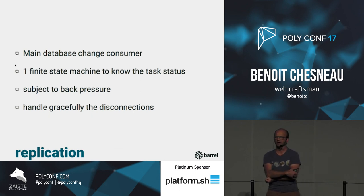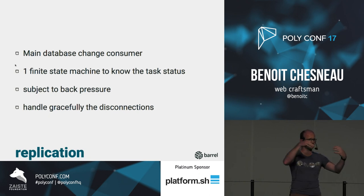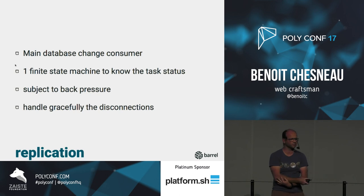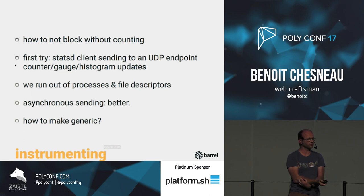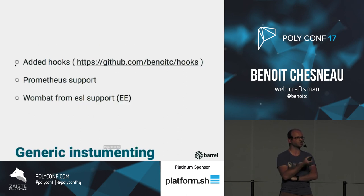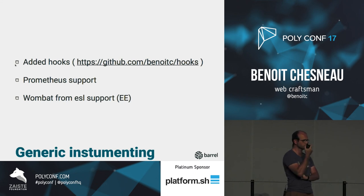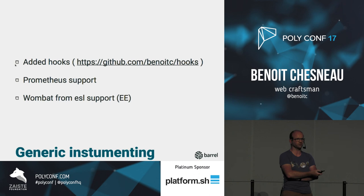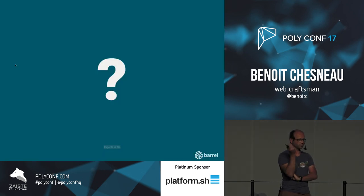Replication is done by listening on changes — on any change, the replication process is triggered, and is also subject to back pressure. We also have instrumentation. The problem with instrumentation in Erlang is how not to block your processes when instrumenting, and how to avoid running out of processes or file descriptors. In Barrel you have a system of hooks — you can hook any metric system you want. By default there are a few supported options, and for enterprise support you can also access the Erlang tool Wombat, which is an operational tool for alarms and metrics on top of your cluster. And that's it — if you have any questions, thank you.